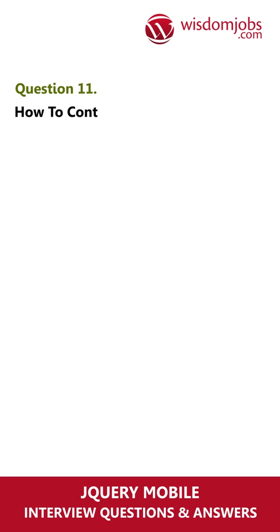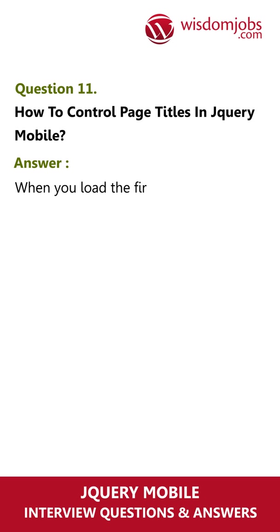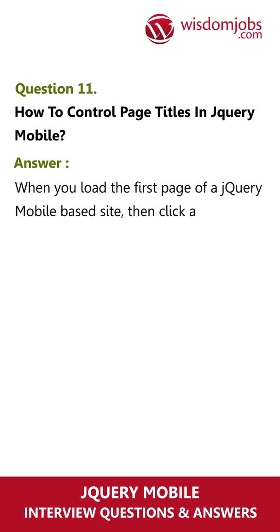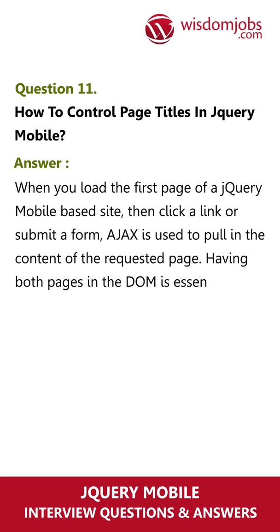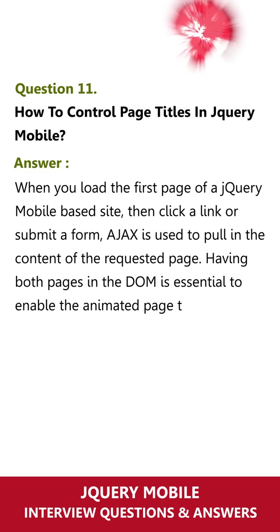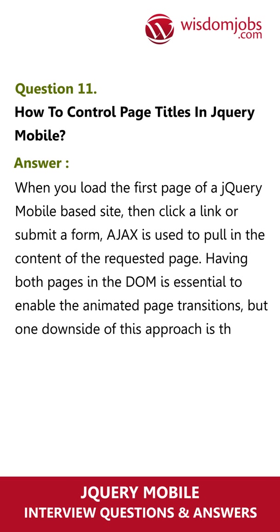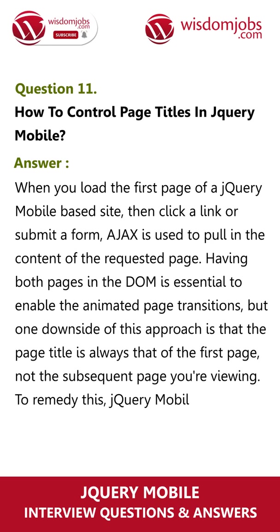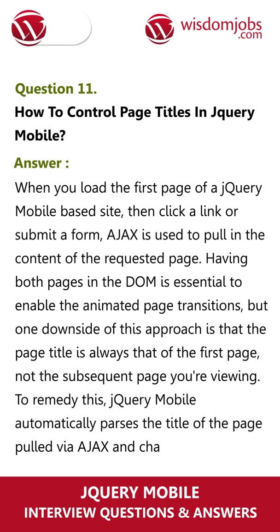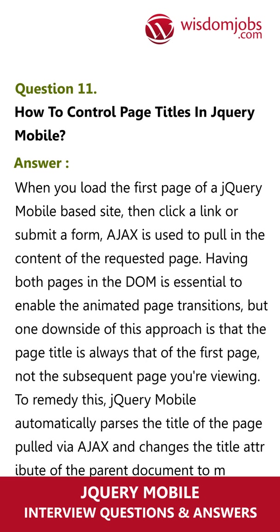Question 11. How to control page titles in jQuery mobile? When you load the first page of a jQuery mobile based site and then click a link or submit a form, Ajax is used to pull in the content of the requested page. Having both pages in the DOM is essential to enable the animated page transitions, but one downside of this approach is that the page title is always that of the first page, not the subsequent page you're viewing. To remedy this, jQuery mobile automatically parses the title of the page pulled via Ajax and changes the title attribute of the parent document to match.